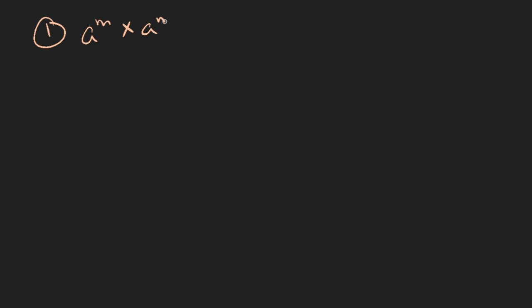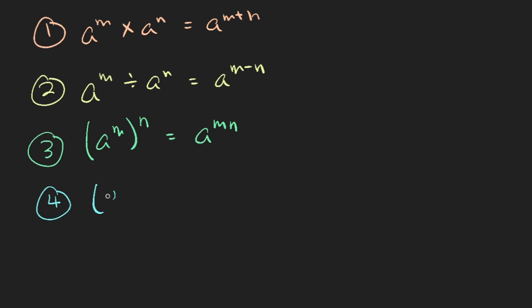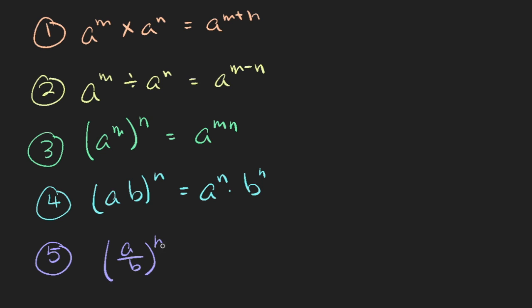Let us recap. Law 1: a^m times a^n is equal to a^(m+n). Law 2: a^m divided by a^n is equal to a^(m−n). Law 3: (a^m) to the power of n is equal to a^(m times n). Law 4: (ab)^n is equal to a^n times b^n. Law 5: (a over b)^n is equal to a^n over b^n. Even though you can prove these, it is my recommendation that you memorize them and be able to do this really well.